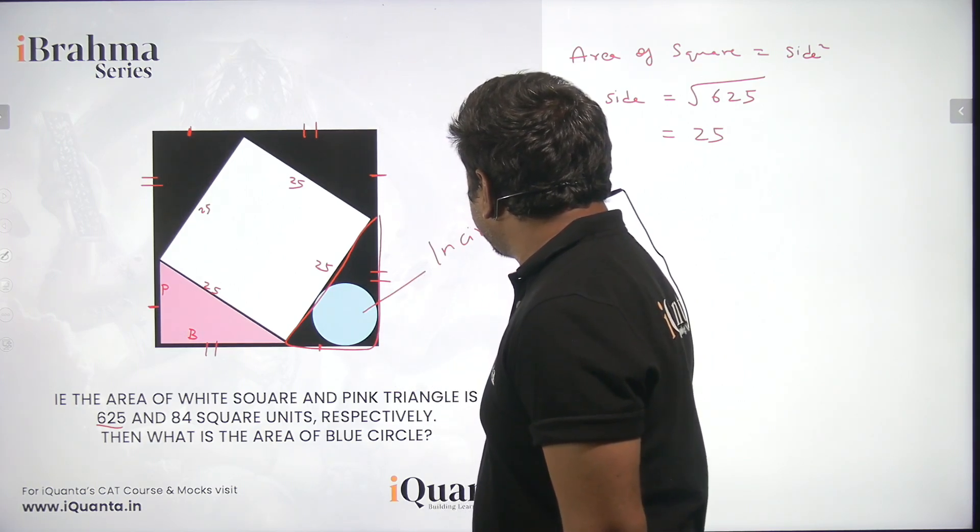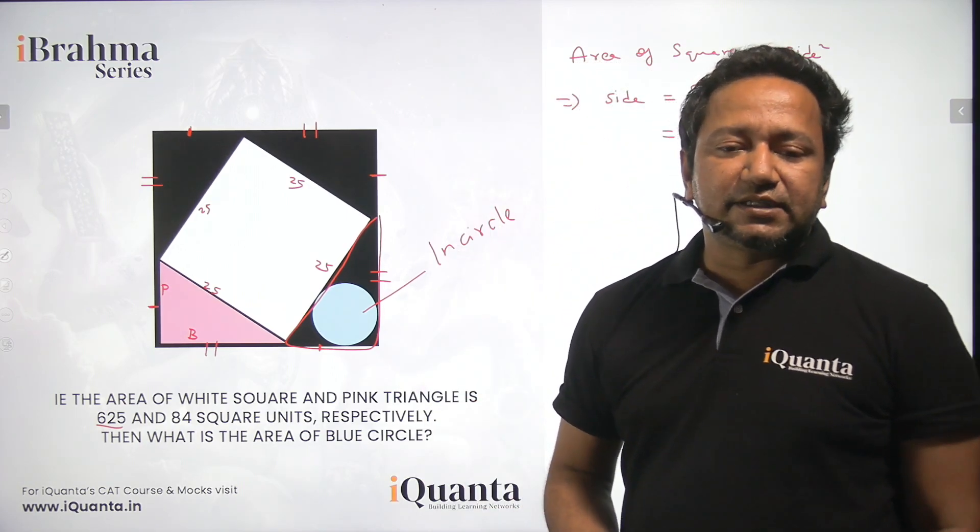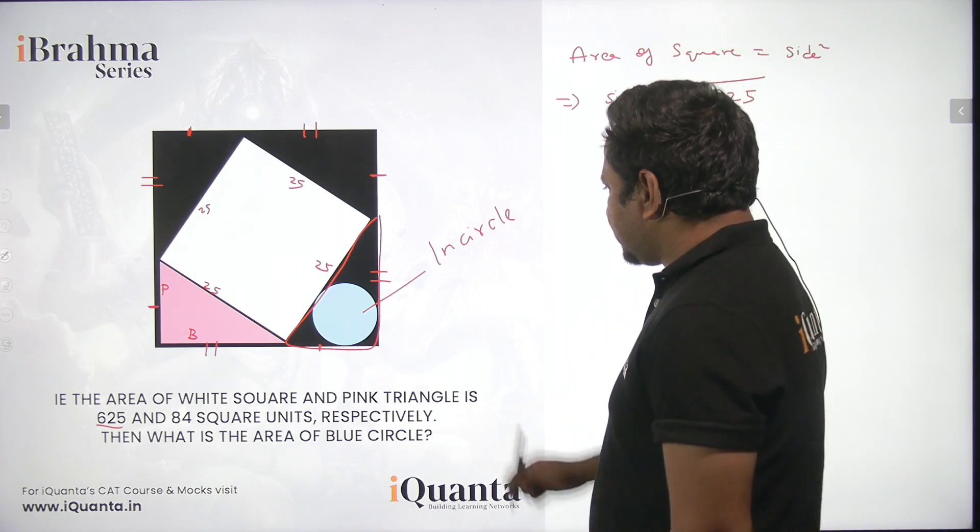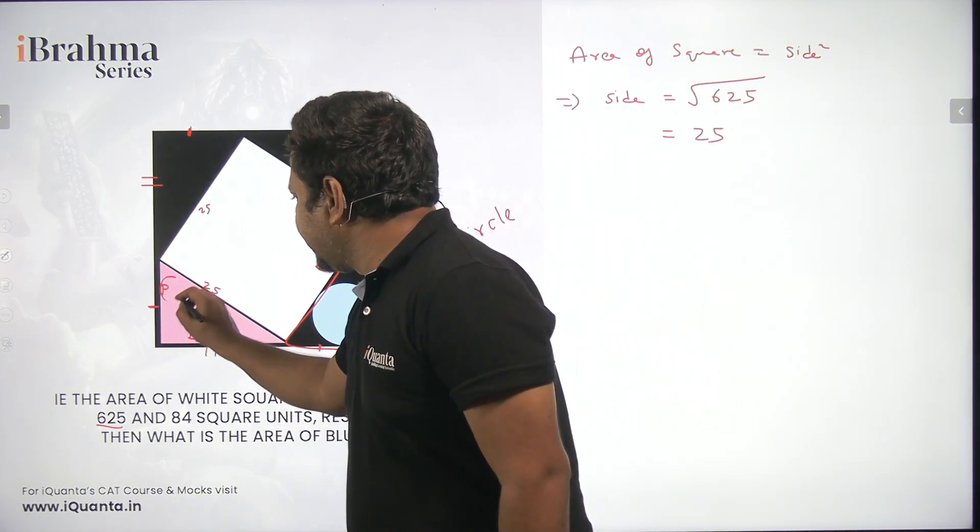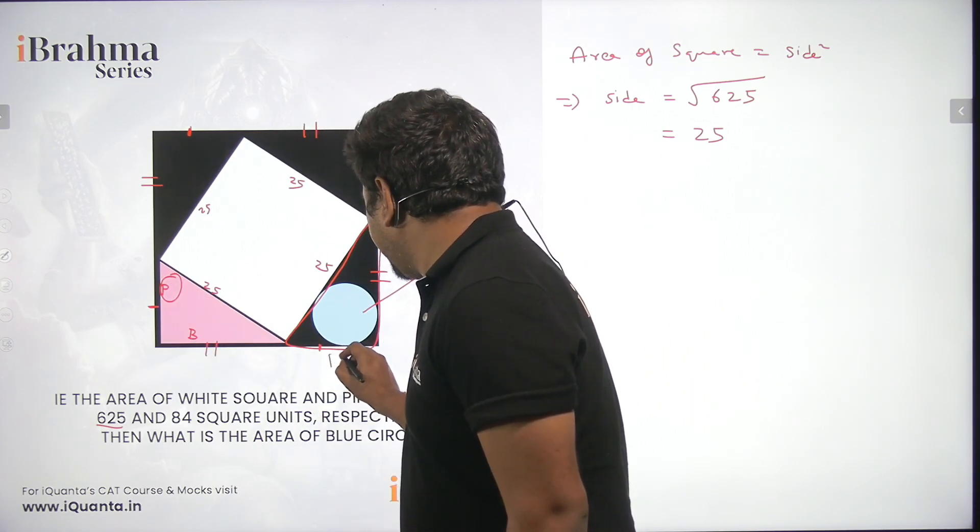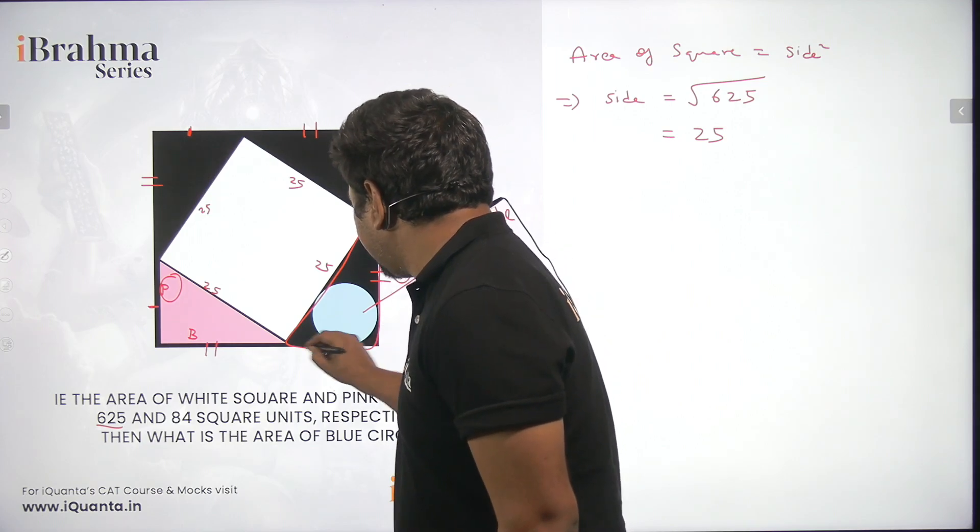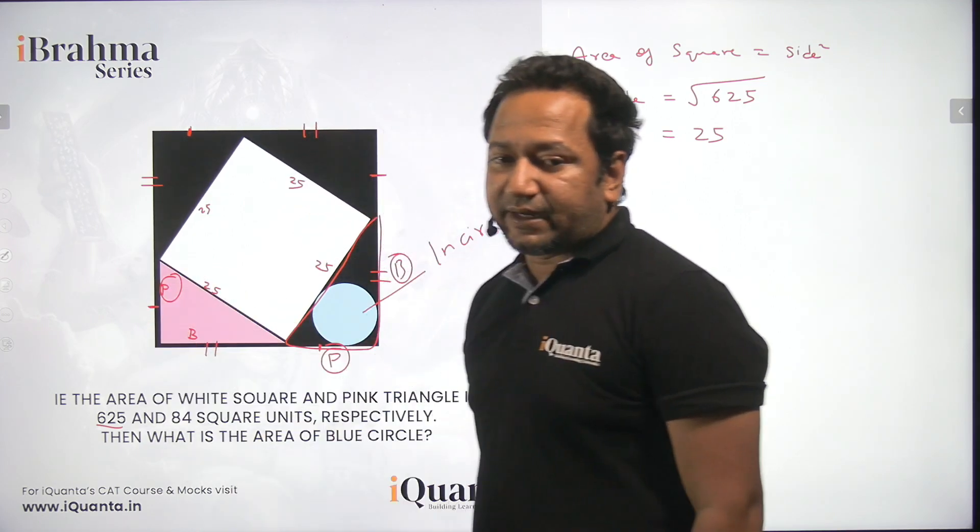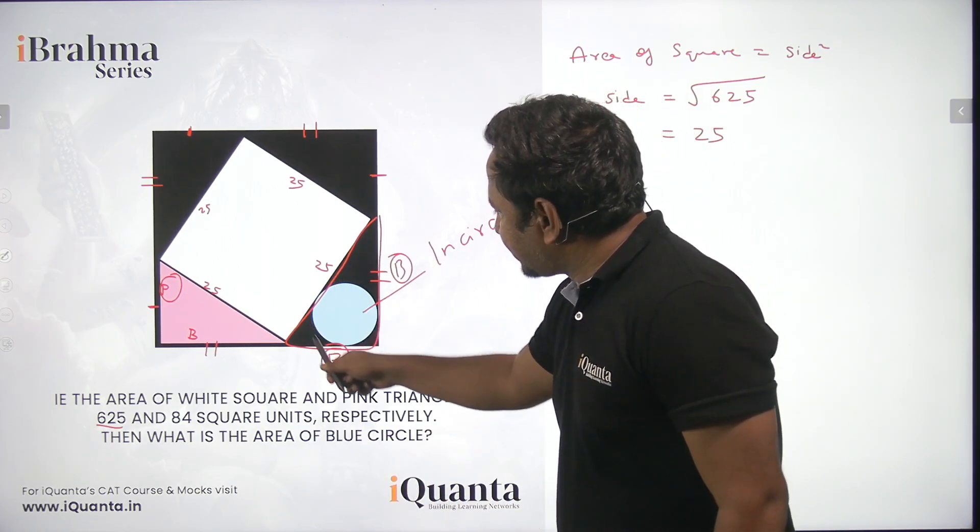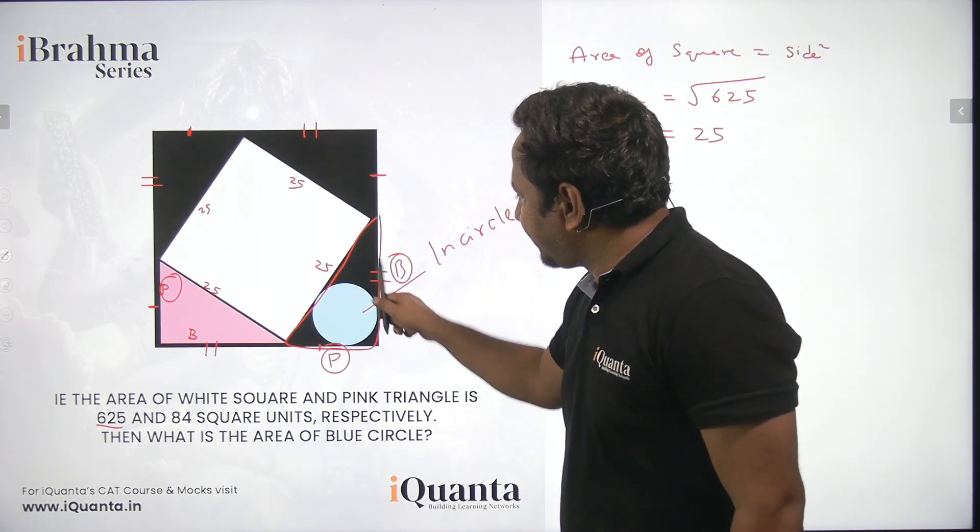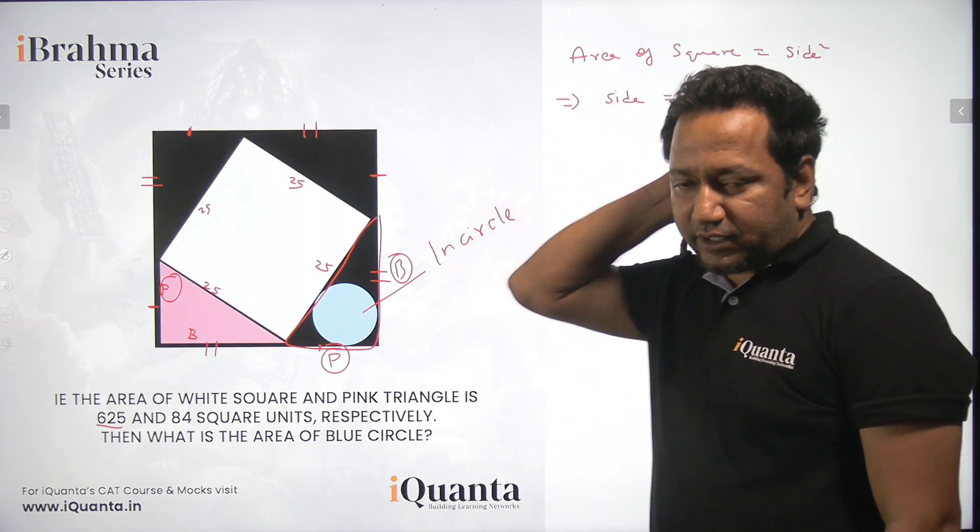As we have established earlier, this will also be a right angle triangle and this circle would be called as encircle. Encircle is basically the circle of maximum area which can be inscribed inside a triangle. So this encircle is of this right angle triangle. If we calculate the value of P here, similarly this will be P and this side will be equal to B. So once we have calculated P and B for this pink triangle, we will be able to understand the sides of the black right angle triangle inside which the circle has been inscribed.